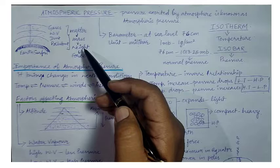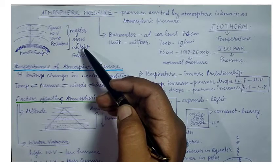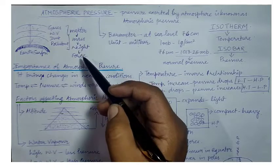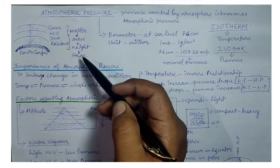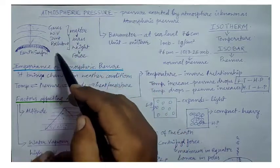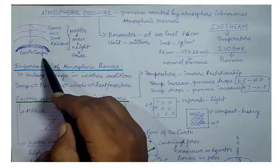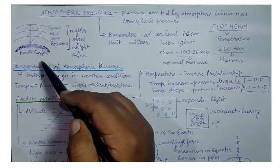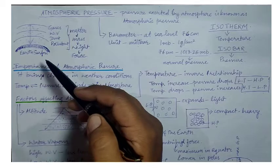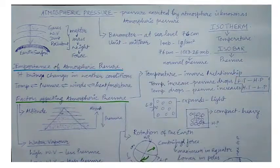Mass refers to the weight of that object. If it has weight, then it definitely has its own force. Ultimately, it is the force exerted by these different matters present in the atmosphere on the Earth's surface. The weight of the column of air at any given place or time is considered as atmospheric pressure.